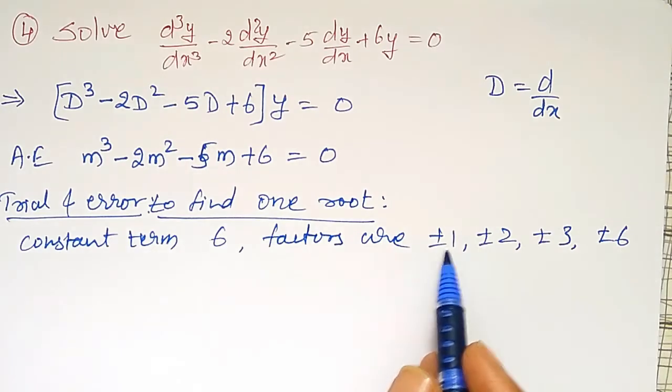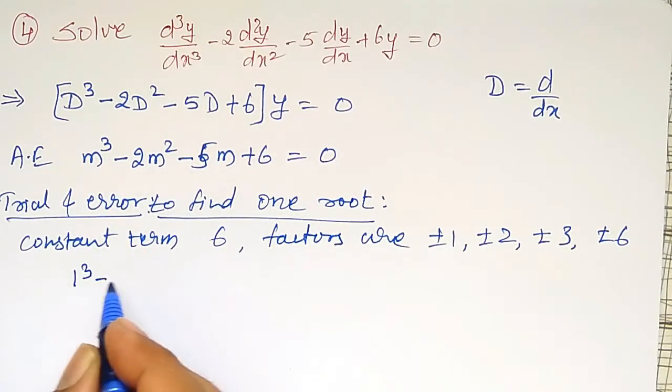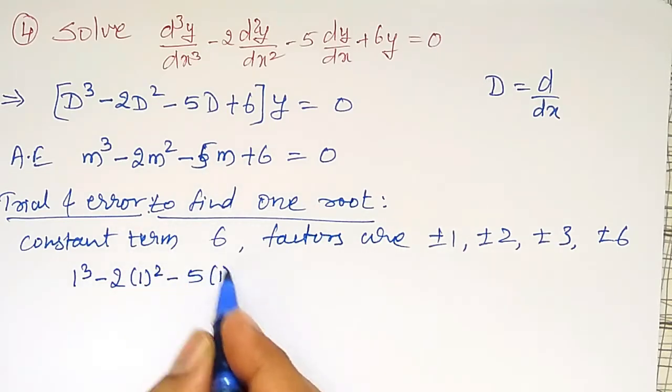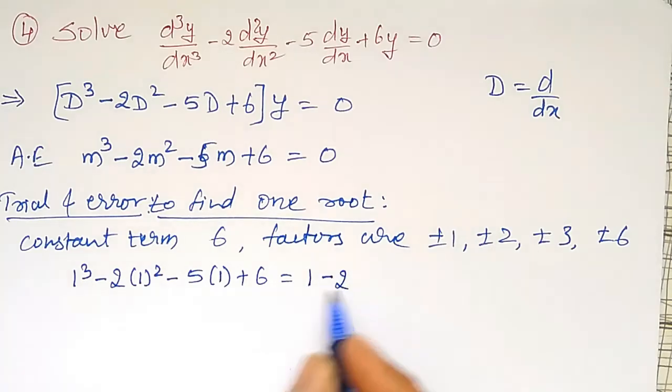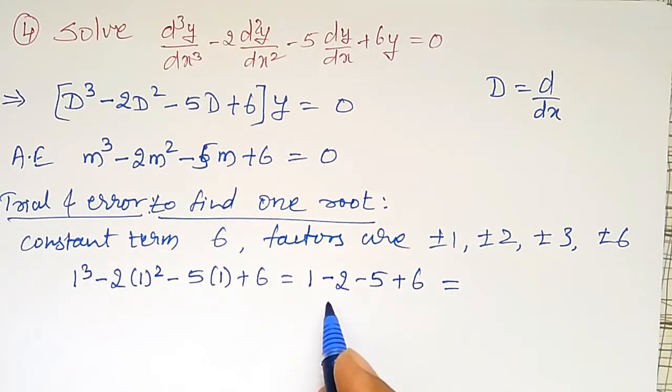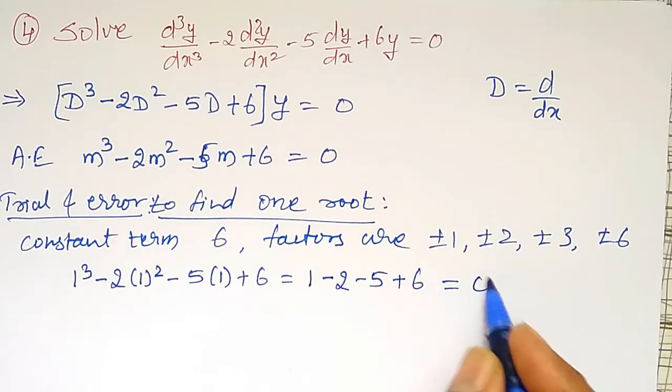Then let me check one by one, which value it holds good for this one here. Let me check first. First one equal to plus 1 equal to 1³ - 2(1)² - 5(1) + 6 equal to 1 - 2 - 5 and plus 6, which is equal to 1 plus 7, 7 minus 2.